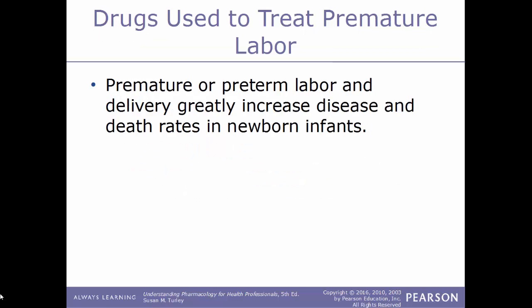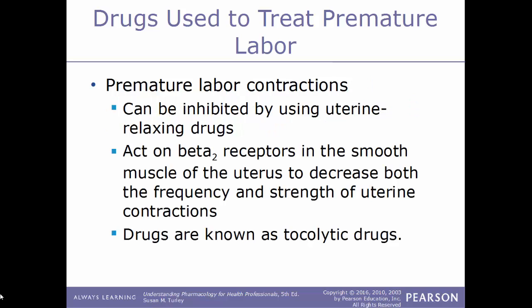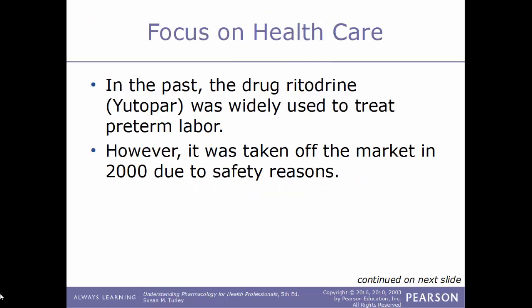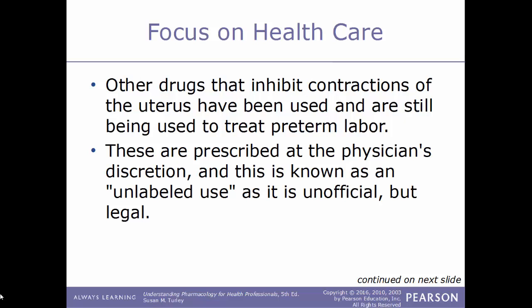Premature or preterm labor and delivery greatly increase disease and death rates in newborns. Premature labor contractions can be inhibited by uterine relaxing drugs, also known as tocolytic drugs, which act on beta-2 receptors in the smooth muscles of the uterus to decrease both the frequency and strength of contractions. The drug ritodrine (Yutopar) was previously used but was taken off the market in 2000 due to safety reasons. Other drugs used to treat preterm labor at the physician's discretion — known as unlabeled use — include terbutaline (an FDA-approved bronchodilator for asthma), magnesium sulfate, isoxsuprine (a vasodilator), and indomethacin (an NSAID).